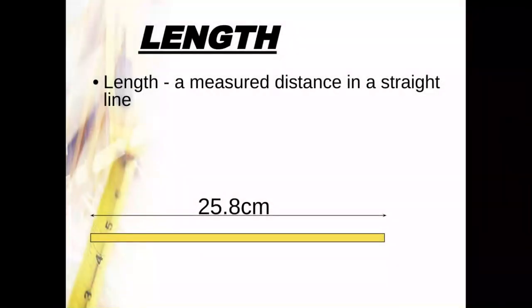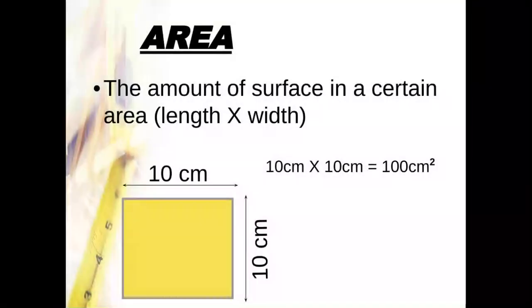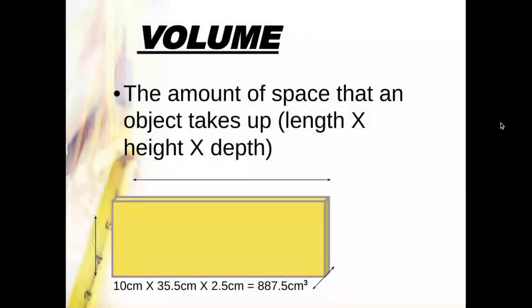Length is a measured distance in a straight line. Our common metric prefixes would be meters and centimeters. Area is calculated by length times width, and that's just the amount of surface in a certain area. So if you were looking at carpeting in a room, you would do an area calculation. Volume is the amount of space that an object takes up. We calculate it with length times width times height or length times width times depth. And you'll notice the measurement is a cube because we use three different measurements.